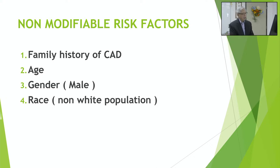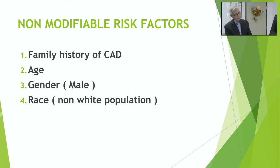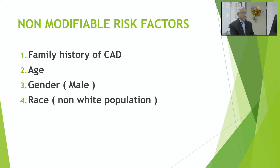Race is also a non-modifiable risk factor. In the United States, the white population has the highest rate of heart disease deaths, followed by the Black population in second place. Third is Asian and Pacific Islander, which is higher than Hispanic. The Hispanic population is fourth and actually has fewer heart problems than Asians. The lowest rate belongs to Alaskan or American Indian populations.